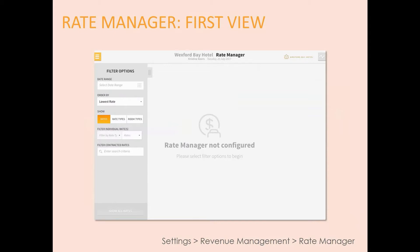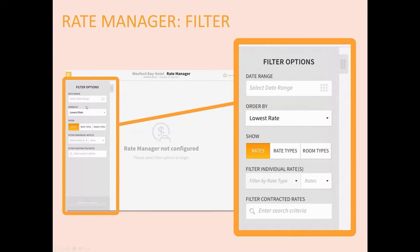The next slide shows our filter options. Up at the top we have our date range — this is where you select the dates you want to look at. You can also choose how you'd like your data sorted: by lowest rate, by highest rate, or alphabetically. You can choose what you want to look at — rates, rate types, or room types. And below you have additional filter options where you can filter by individual rate codes or specific contracted rates.